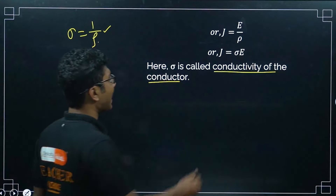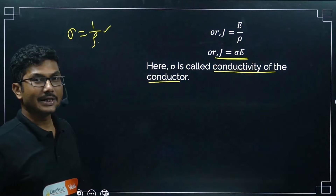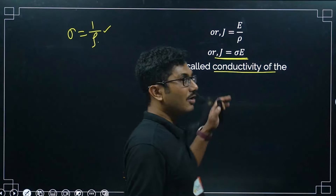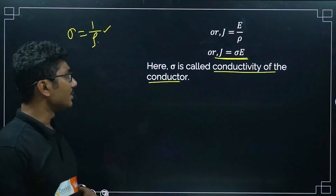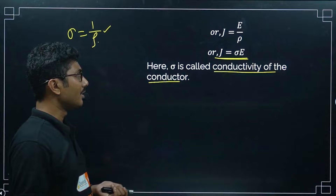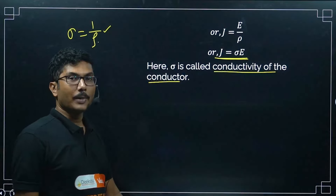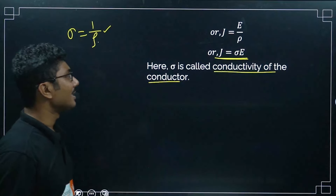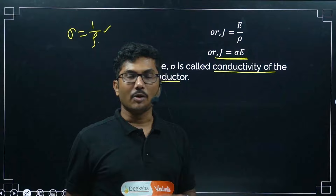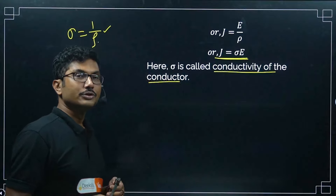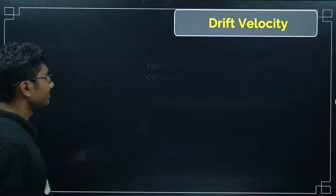J = σE is the alternative representation of Ohm's law. Remember this formula — it is asked less frequently, but with some syllabus deletions, they may ask questions based on it in future exams.